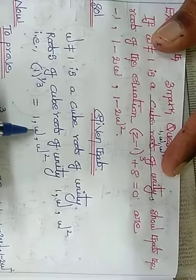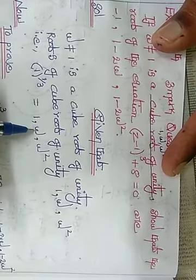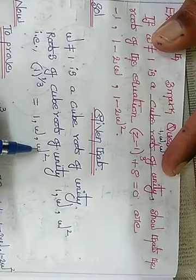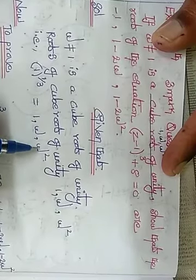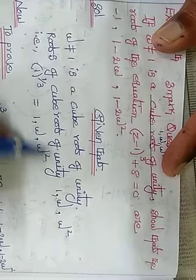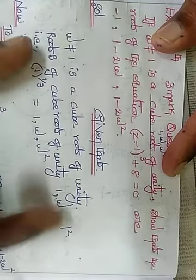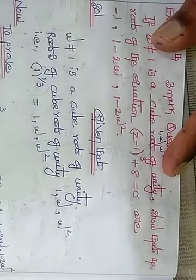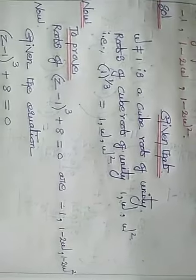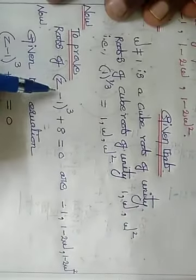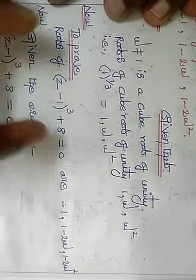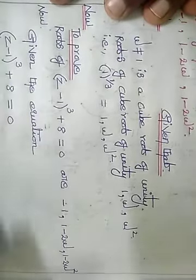1, omega, omega square. Omega equals minus 1/2 plus i root 3 divided by 2. Omega square equals minus 1/2 minus i root 3 divided by 2. These are the roots of the equation.